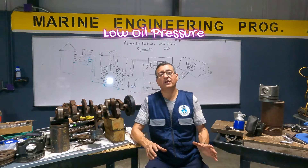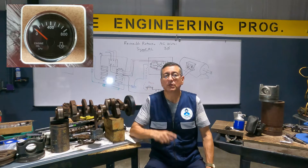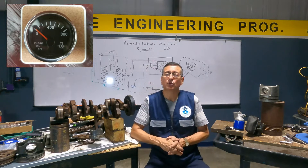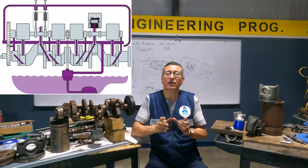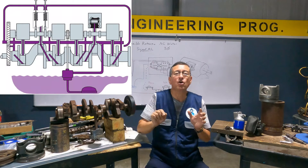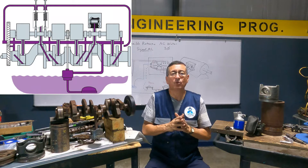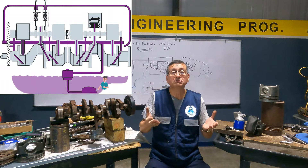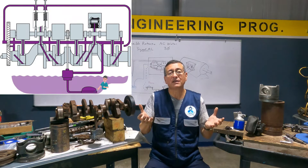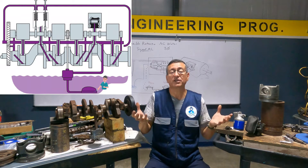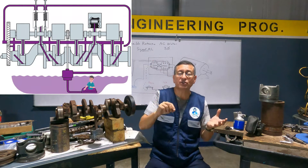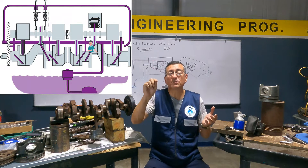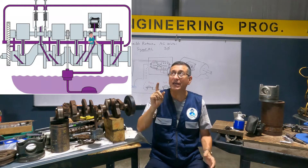What happens if the gauge of oil pressure is showing low oil pressure? To analyze the low oil pressure, we are going to follow the path of the oil in a typical marine diesel engine quickly. The oil starts in the bottom, in the oil pan. The strainer of the oil pump is submerged in the oil pan, suctioning the oil, and the oil starts to pass through small cavities in the block and the head.